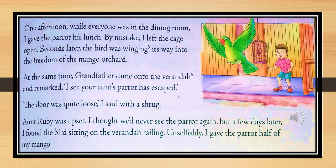By looking at the picture, you can guess what happened next. The cage is open, the small boy is standing surprised and shocked, and the parrot is flying out of the cage. One afternoon, while everyone was in the dining room, I gave the parrot his lunch. By mistake, I left the cage open. Seconds later, the bird was winging its way into the freedom of the mango orchard. 'Winging' means flying.